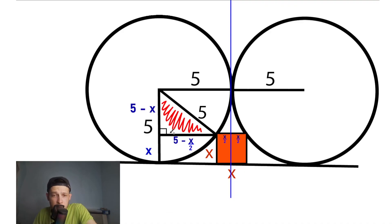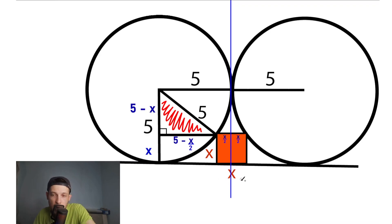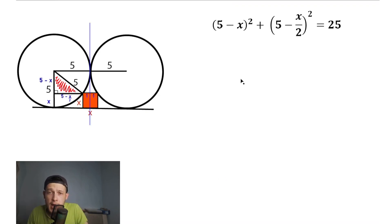Now let's consider this triangle. We have a right angle. We know that this side equals 5 minus x over 2. This side of the triangle equals 5, and the last side equals 5 minus x. So right now let's apply the Pythagorean theorem to find x, which is our side length of the square. After applying it, we have: (5 minus x over 2) squared plus (5 minus x) squared equals 5 squared, which equals 25.